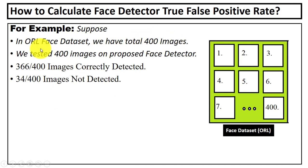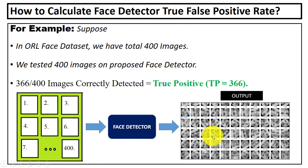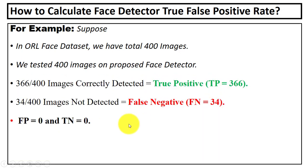Let's understand this with an example. We tested the proposed face detector on the ORL face dataset, which contains 400 digital images. Out of 400, 366 digital images were correctly detected and 34 images were not detected. Face exists and detected is true positive, so the value for TP is 366. Face exists but not detected is false negative, so the value for FN is 34.